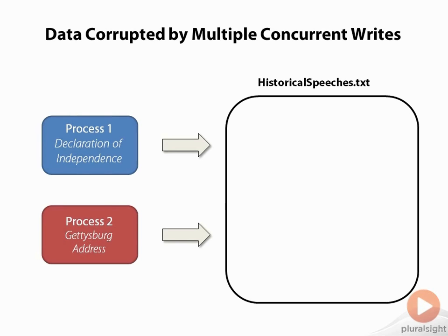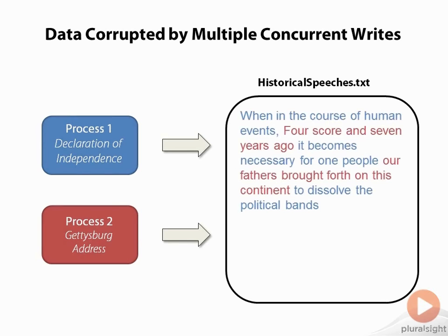Another scenario that could occur is that the writes from the two different processes are interleaved together, and so we end up with some text that looks garbled. Again, this is clearly not what we want, because now our file is pretty much unreadable. It's going to be impossible for any process reading this file to figure out what the original data was really supposed to be. The issue in both these scenarios is that the activities of these two processes aren't coordinated in any way. There isn't any mechanism to coordinate access to our file, and it won't take long until two or more processes try to write to the file at the same time, and then the file is sure to become corrupt.